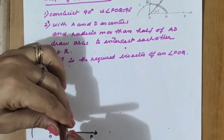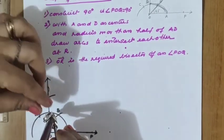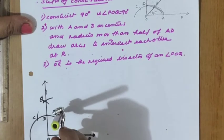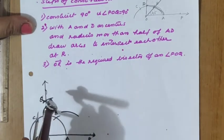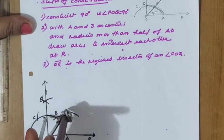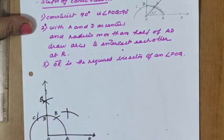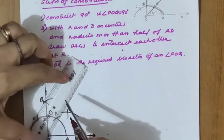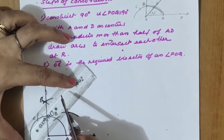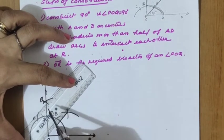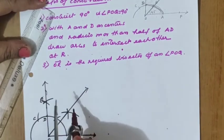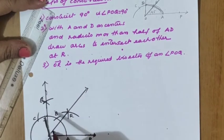Now take AD as the distance in your compass — check it is more than half. With A as center, draw the first arc, then with D as center draw another arc. The angle is equally bisected. Through O, we join and draw another ray OR.